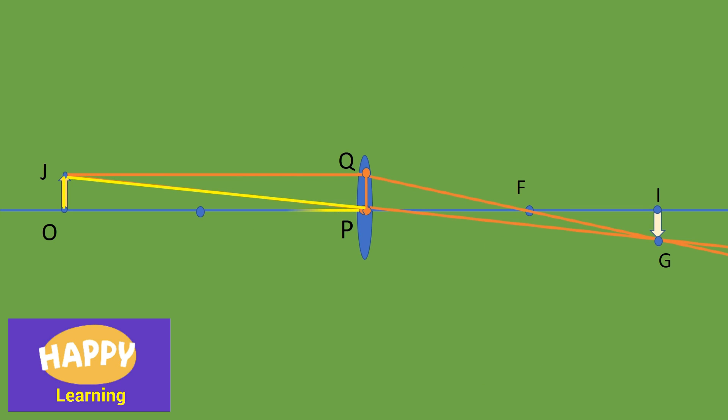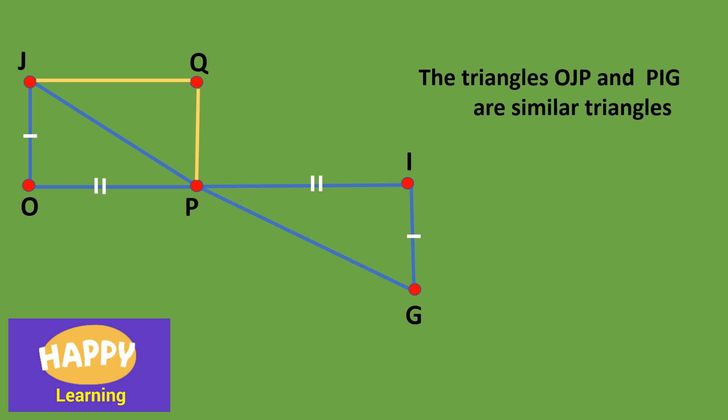The triangle OJP and the triangle PIG are also similar triangles. From the property of similar triangles, we can write OJ by IG, observe the diagram, OJ by IG is equal to PO by PI. Since OJ is equal to PQ, we have PQ by IG is equal to PO by PI. Let it be equation number 3.